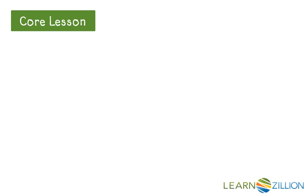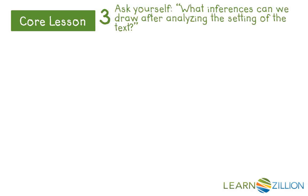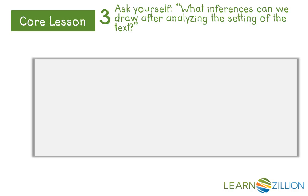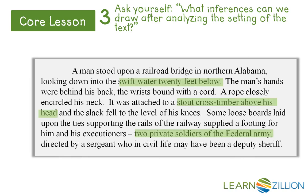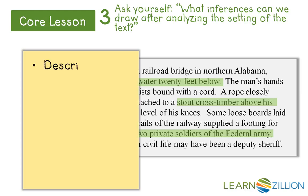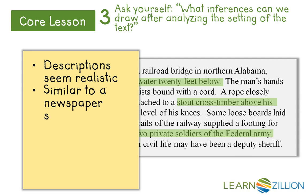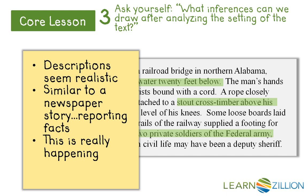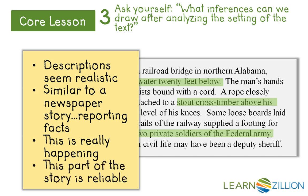Now that we have thought about the setting and how those details work together, we need to ask ourselves: what inferences can we draw after analyzing the setting of the text? When we looked at that first section of the text, we are able to infer some things from the descriptions that seemed realistic. We can infer that these descriptions are almost similar to a newspaper story — like it's reporting facts. This is really happening, and this is the part of the story that is reliable.